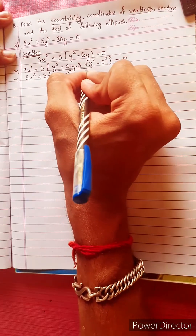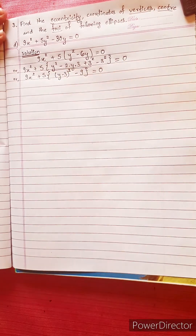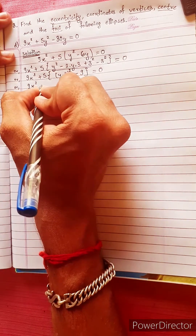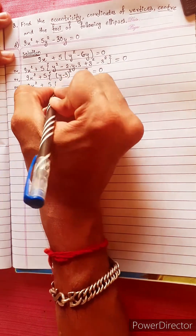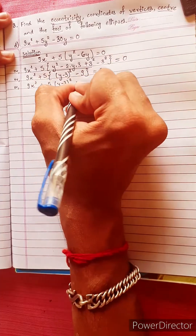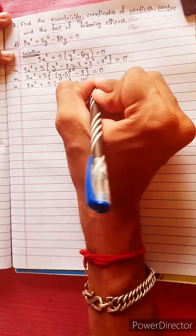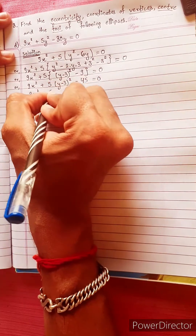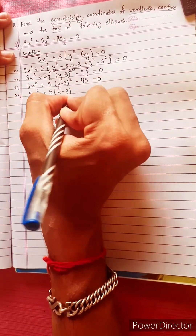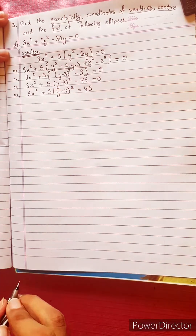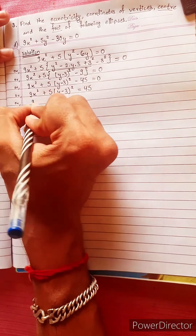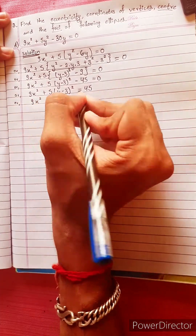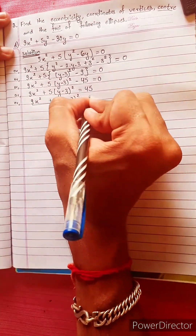So we get 9x squared plus 5 times (y minus 3) whole square, minus 45 equals to 0. Or, 9x squared plus 5 times (y minus 3) whole square equals to 45. Dividing throughout by 45, we get the equation equal to 1.